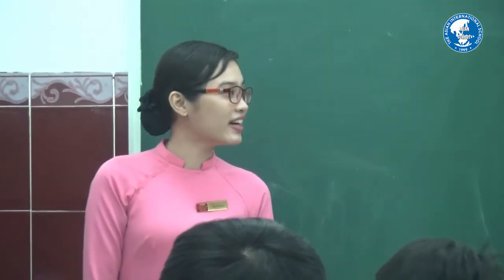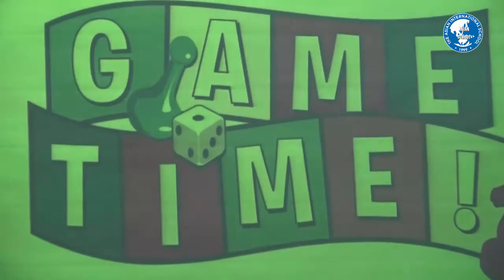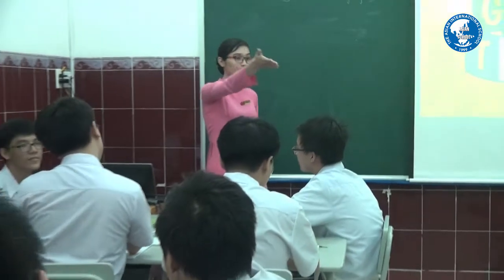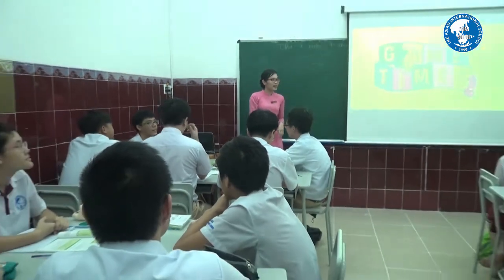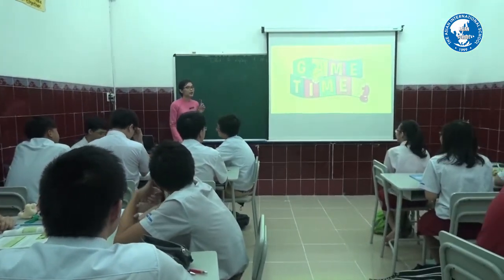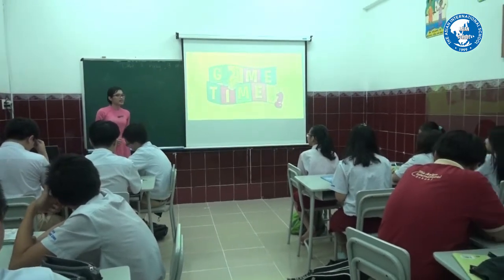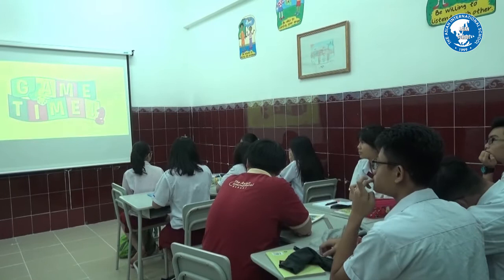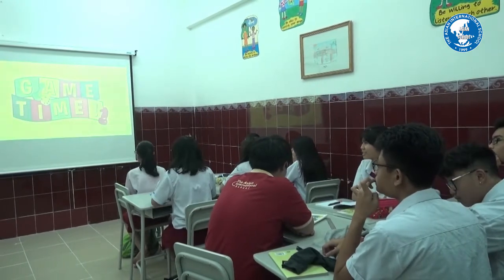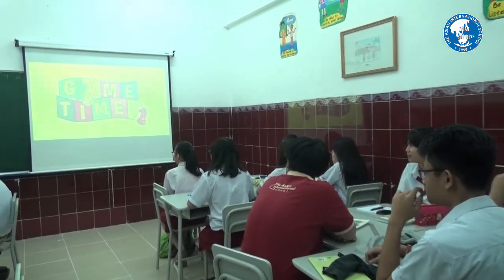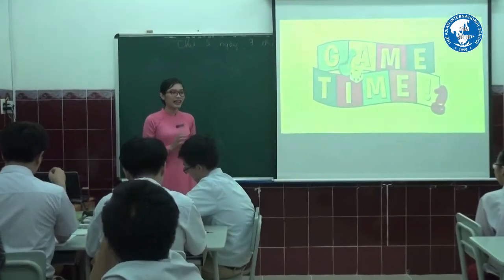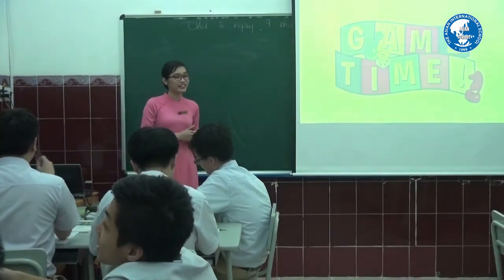Before we start our lesson, let's play a game. We'll invite you into four groups: group one, group two, group three and group four. In each turn, I will invite one person to come here, and he or she has to use their body language to describe an action. You have to figure out what that action is. The group with more correct answers will be the winner and I will give them a reward.